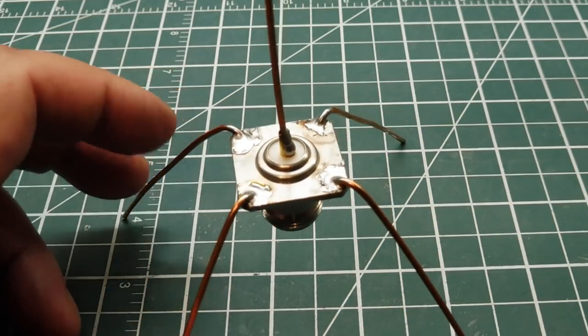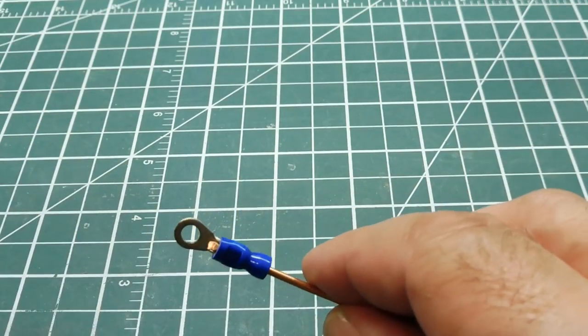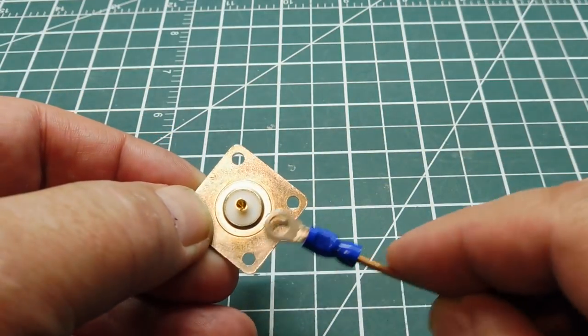So what you could do, you could get little eyelet, crimp eyelets, and put your radials in there, and then you could get a bolt and nut, and you could bolt them on to your connector that way.